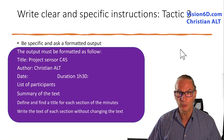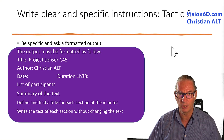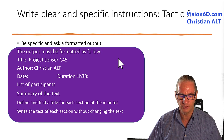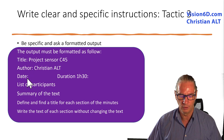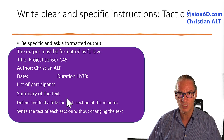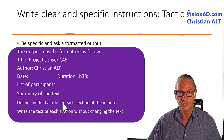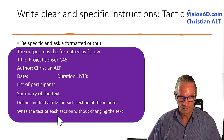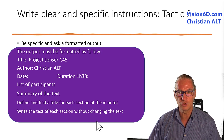I have now prepared the second prompt in which I will ask it to format the output. For this, I'm giving the title and the author. I'm saying that I want the date and the duration. Then I ask it to perform a list of participants, summarize the text, and for each part define a section with a title and write the text of each section.